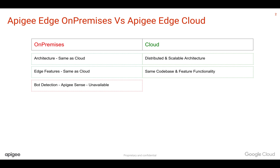Apigee Sense, which is a bot detection platform, is not available on-premises. It is only available on Apigee Edge Cloud because we leverage concepts like machine learning and artificial intelligence to detect bots using cloud technologies. Unfortunately, it's not available on-premises.